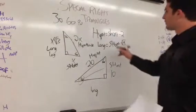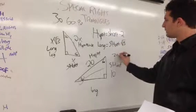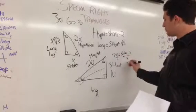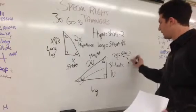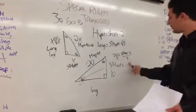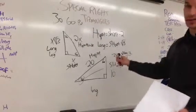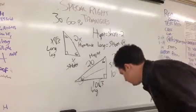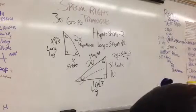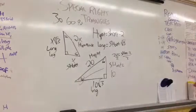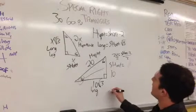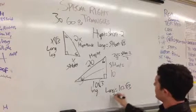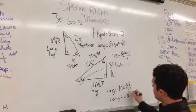The other way to do it is: hypotenuse equals short times 2. So 20 equals short times 2. Divide by 2, and you get short equals 10. Now let's say you want your long. Your long equals your short times square root 3. So long equals 10 times square root 3.